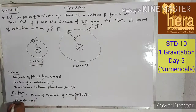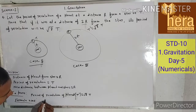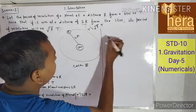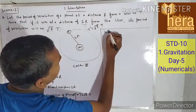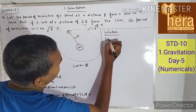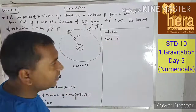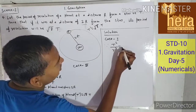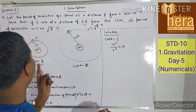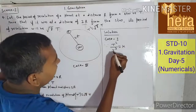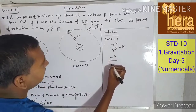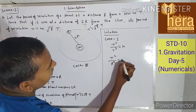Formula used: T²/R³ = K. Solution — Case 1: T²/R³ = K. This is equation number 1.